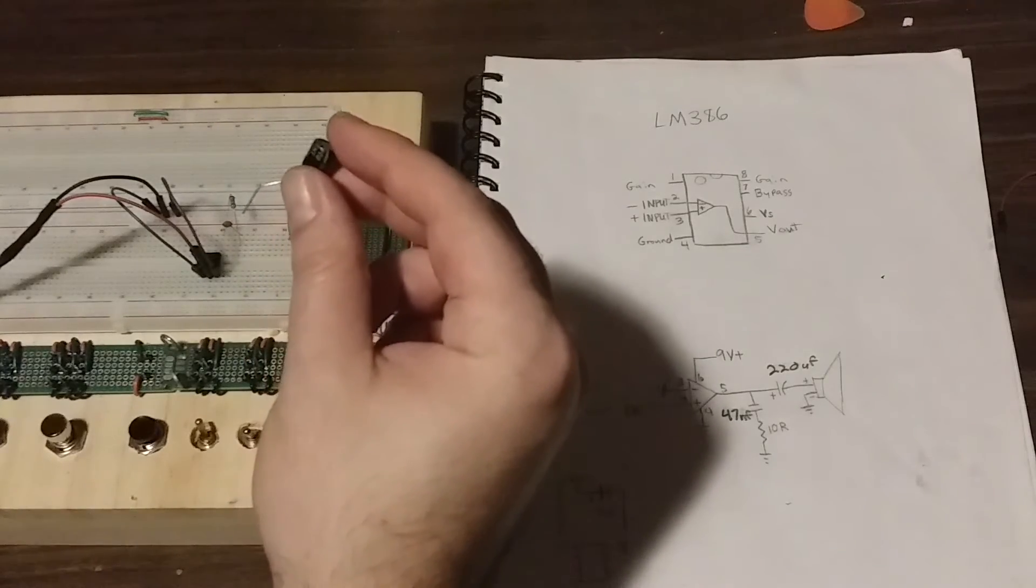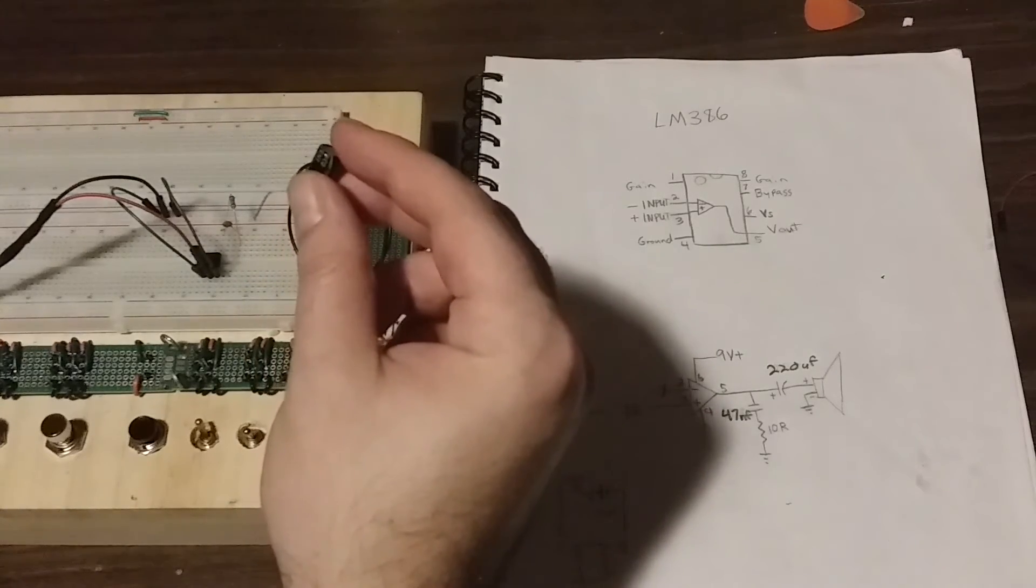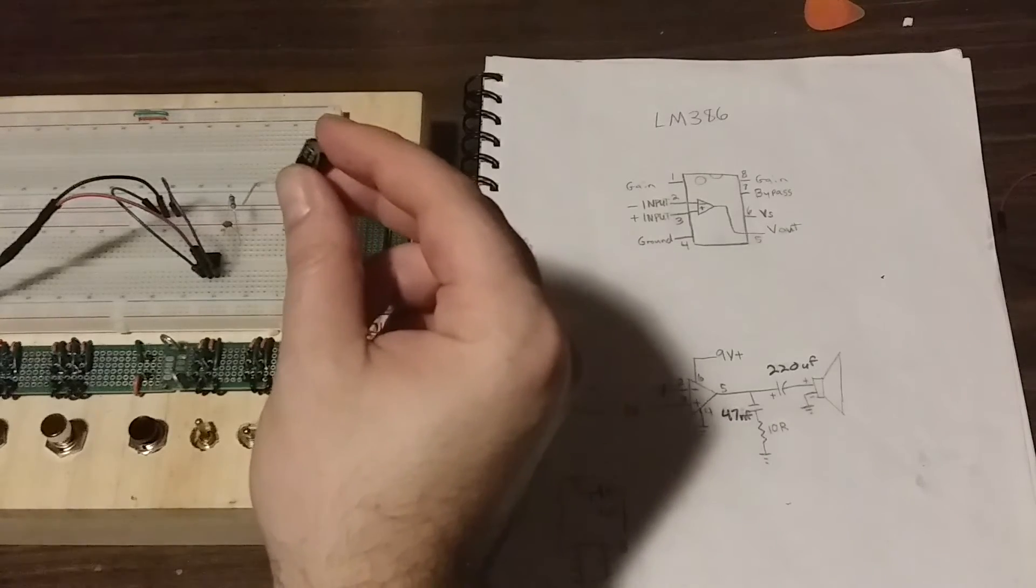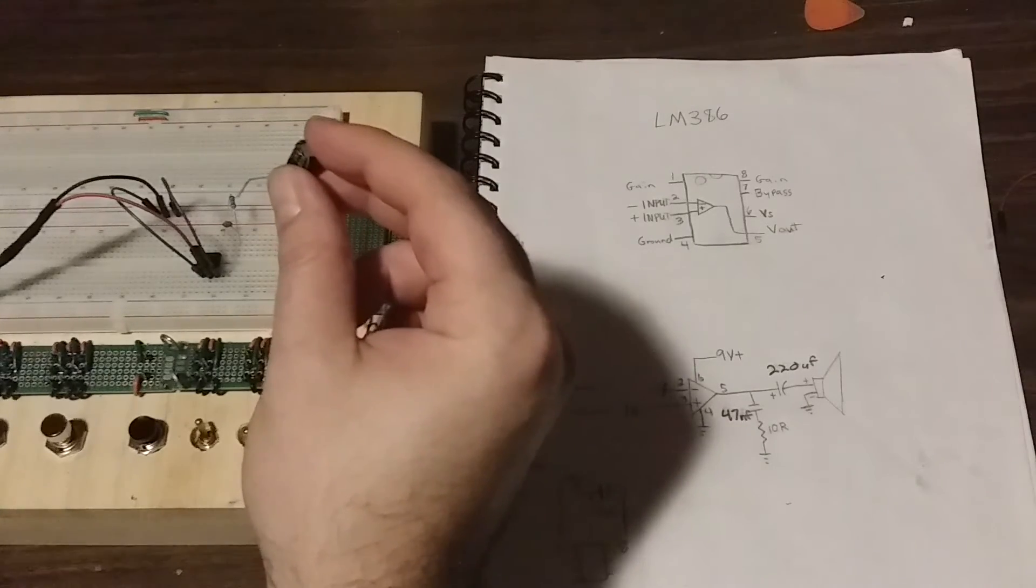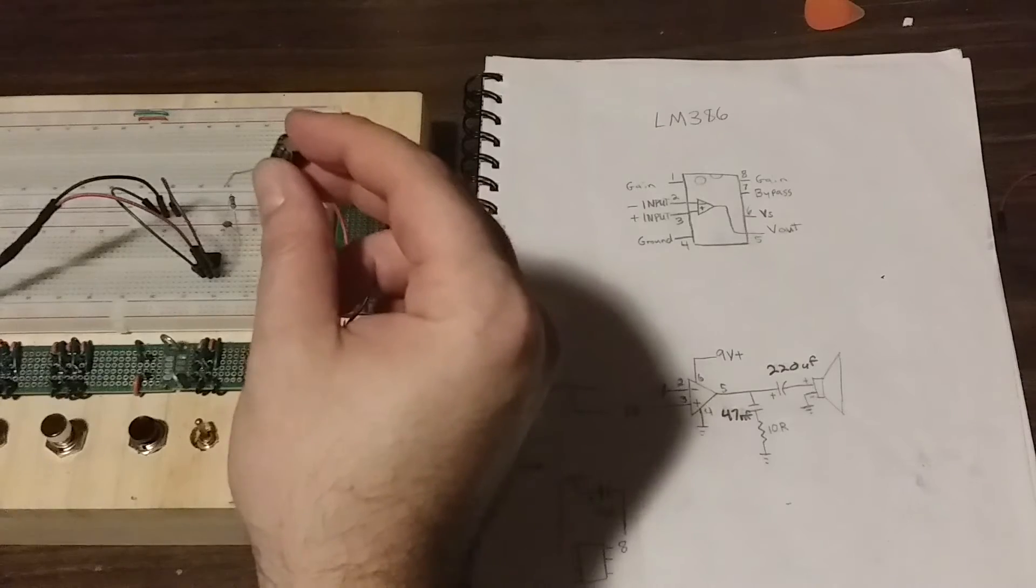And now I'm going to plug the positive leg of the 220 UF capacitor into the rail that has pin number 5. And the negative leg will go into an open rail.